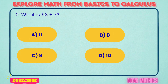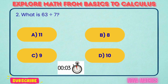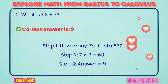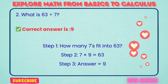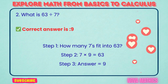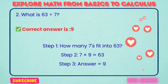2. What is 63 divided by 7? Correct answer is 9. 63 divided by 7 equals 9. We find this because 7 times 9 is 63.